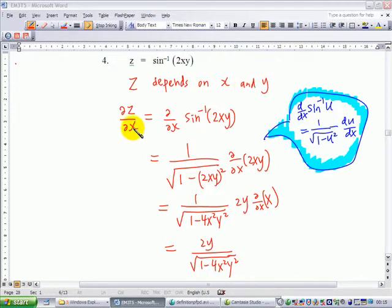Now to find ∂z/∂x, this is equal to the differential with respect to x of sine inverse of 2xy. How do we differentiate sine inverse of 2xy?